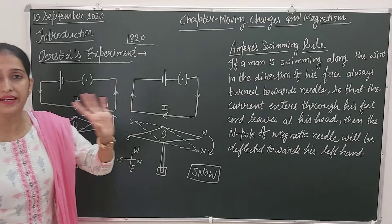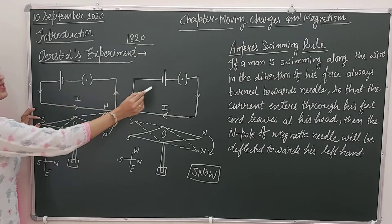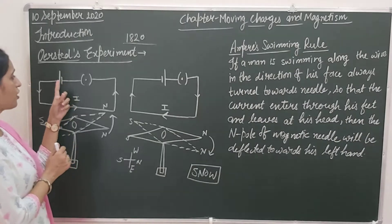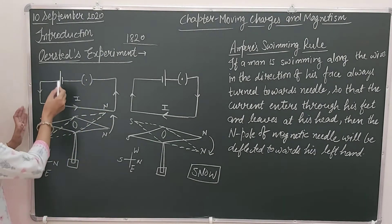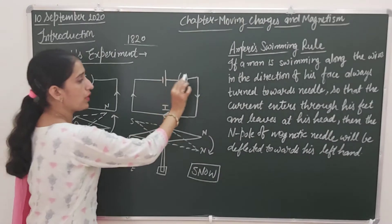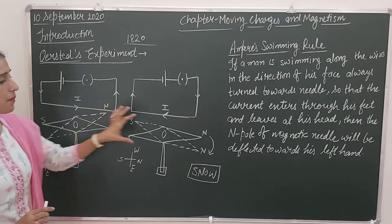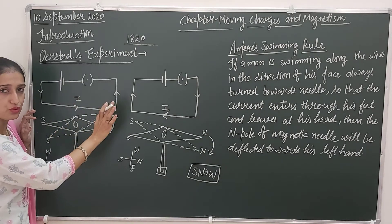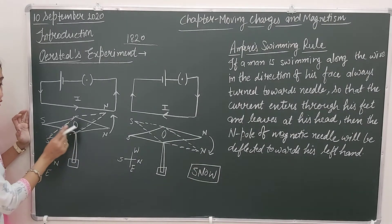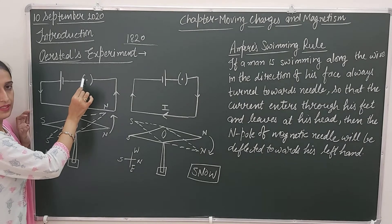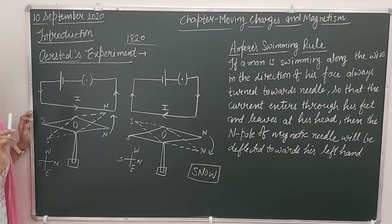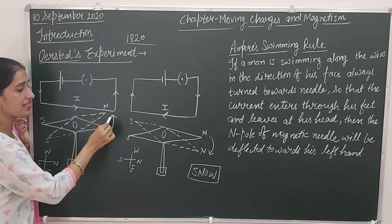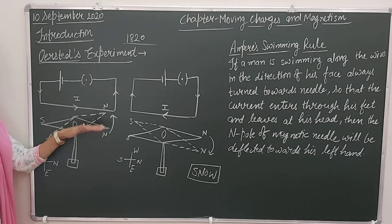This is also a similar diagram. The only difference is that the direction of the cell is reversed. If the direction of the cell is reversed, the direction of current is also reversed. The direction of current is from the positive electrode of the cell towards the negative electrode. So current is flowing anti-clockwise in one loop and clockwise in the other. When he switched on the key, it was observed that the north pole of the magnetic needle deviated and reoriented itself towards the west direction.